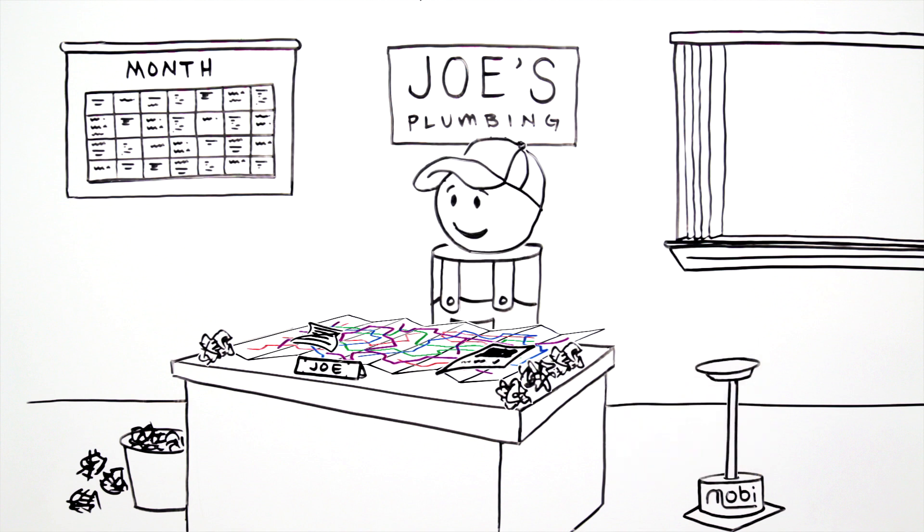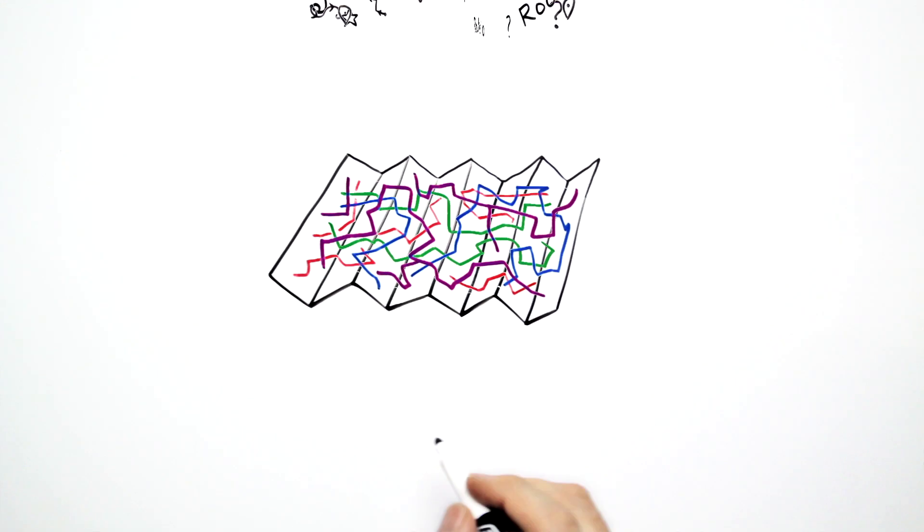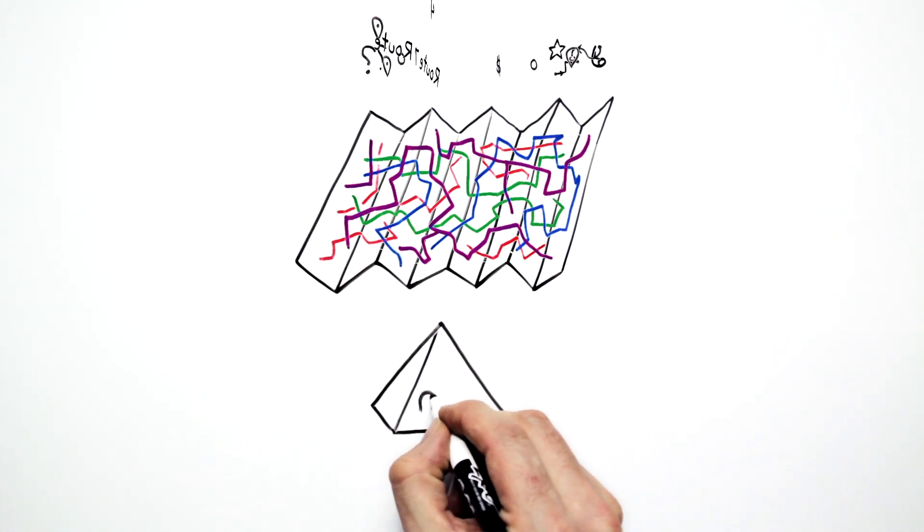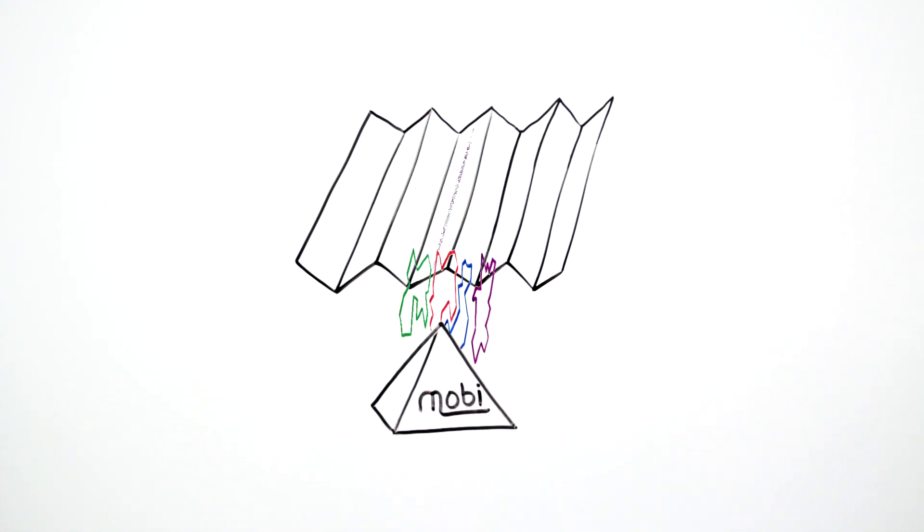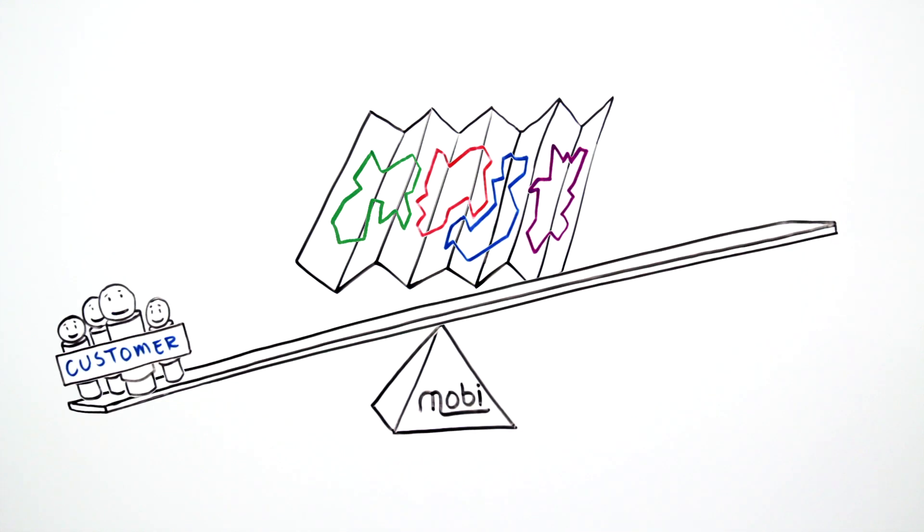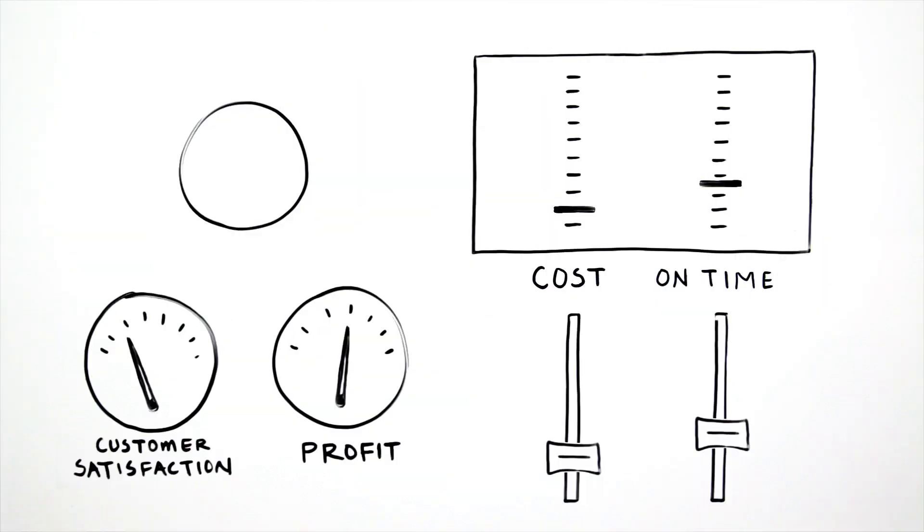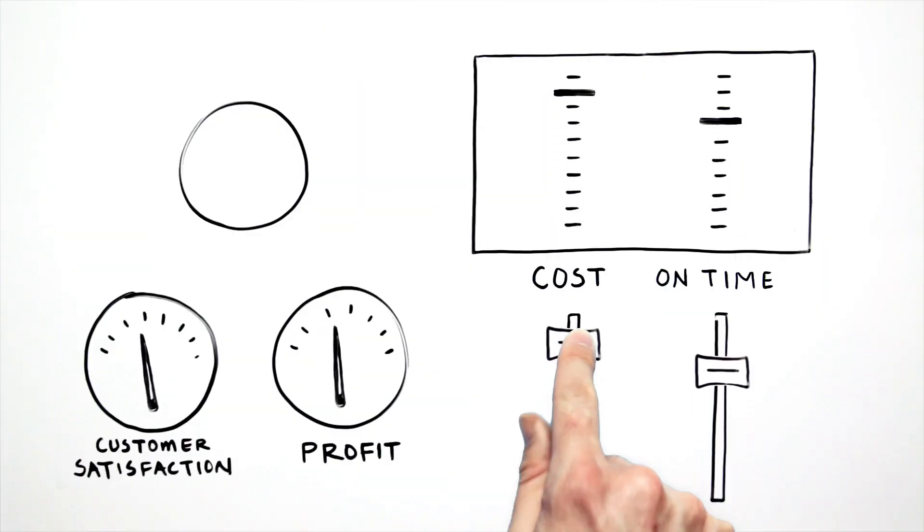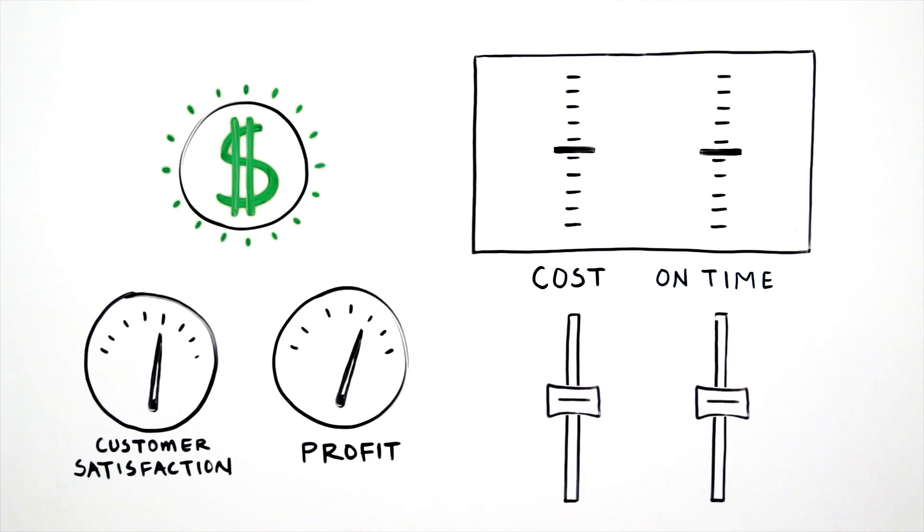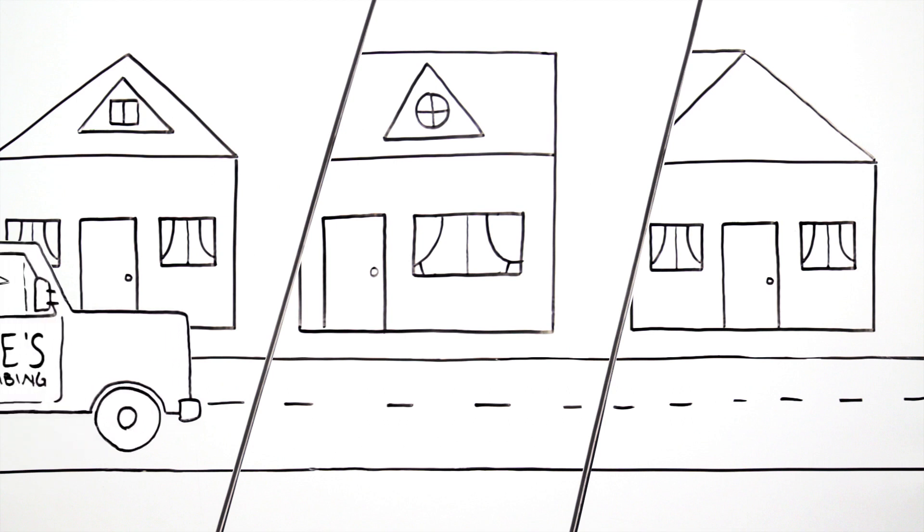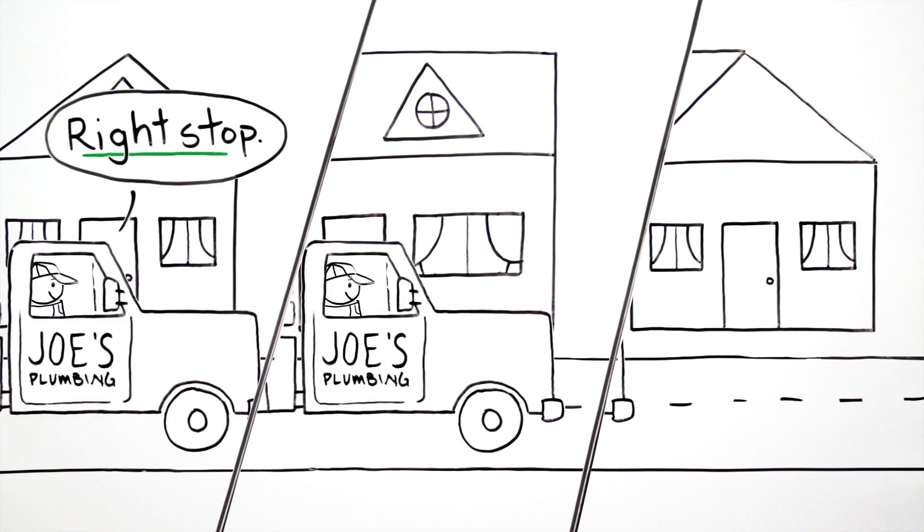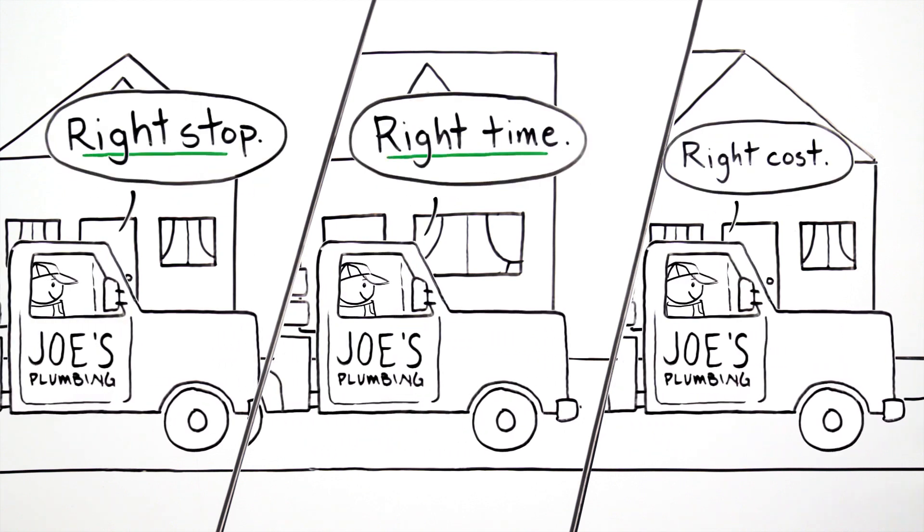Since finding Mobi, things are much easier. Joe and his growing team use Mobi's schedule and planning software to create efficient routes that balance customer satisfaction and operational costs without getting lost in the complexity. Joe loves that it's customizable so he can balance trade-offs like cost and on-time arrivals. With Mobi, Joe's team now quickly and cost-effectively plans for and successfully manages a growing business.